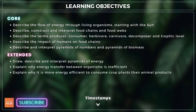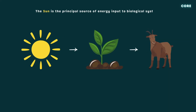For extended, you also need to describe and interpret pyramids of energy, understand why energy transfer between organisms is inefficient, and why it's more efficient from an energy perspective to consume crop plants than animal products.